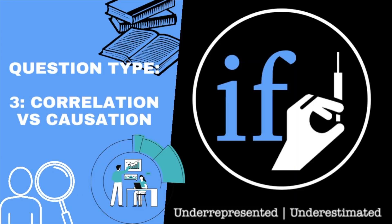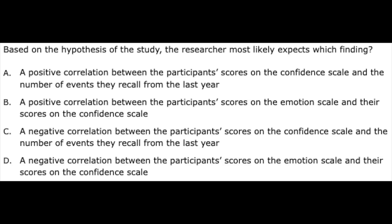Another aspect of research methods that is commonly tested is correlation versus causation. It's important to know how a correlational relationship works, what a positive and negative correlation looks like, but also to recognize when the MCAT is trying to sneak a causal relationship into a correlational design.